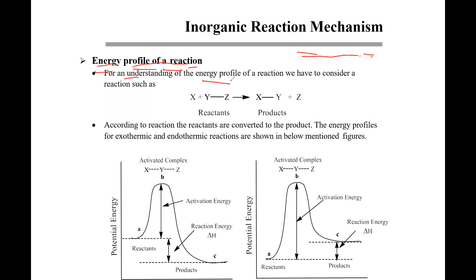To understand the energy profile of a reaction, we consider a reaction like X plus YZ. Y and Z are reactants, X is also a reactant. After the reaction, X associates to Y and Z dissociates from Y, so at the end the product XY is formed along with Z.